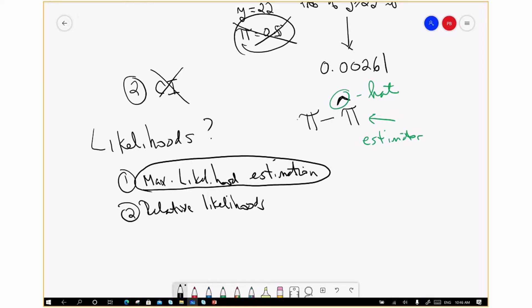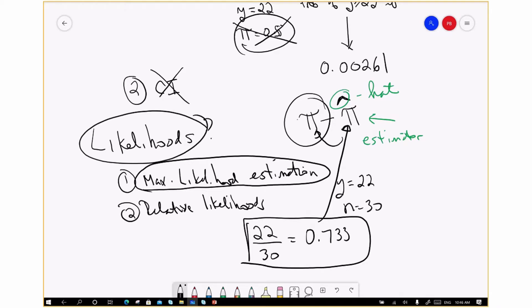Given that what we observed was Y equals 22 in a case where N equals 30, what would our best estimator of pi likely be? Common sense says you get 22 over 30, which gives you 0.733. That's a simple way to come up with pi hat. But we can also use the likelihood function to arrive at an estimate of the most likely value of pi.